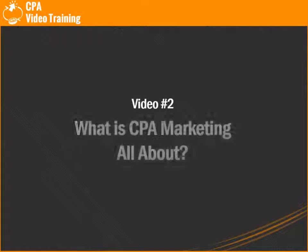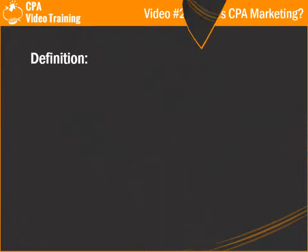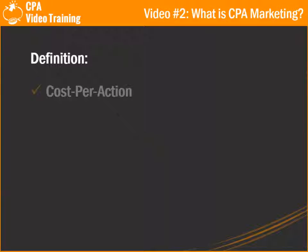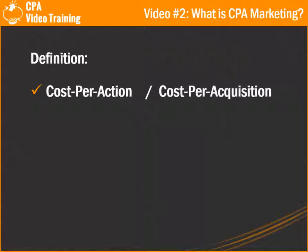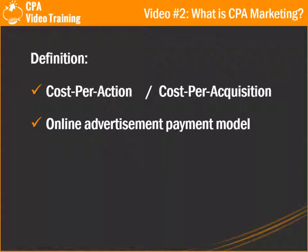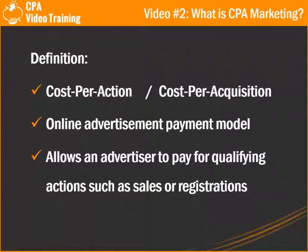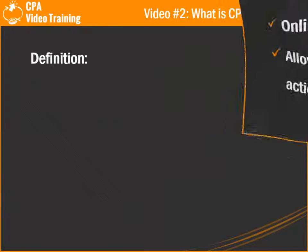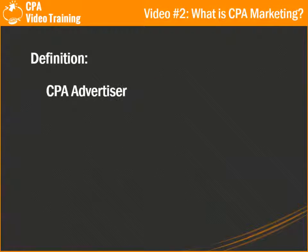Video number two: what is CPA marketing all about? Definition — CPA stands for cost per action, and sometimes it's also referred to as cost per acquisition. Cost per action is an online advertisement payment model that allows an advertiser to pay for qualifying actions such as sales or registrations from a prospective customer.